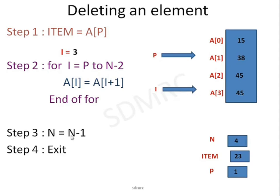Step number 3: n = n minus 1. Now there are 4 elements; I need to restrict only to 3. So n is decremented to 3. If I access this array, it can only access up to the valid location. This value is not considered part of the array. So n = n minus 1 gives 3. There were 4 elements; now there are only 3 because 23 is removed from the list. Step number 4: Exit.